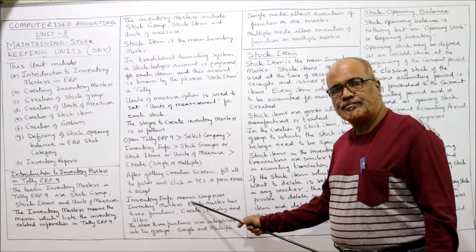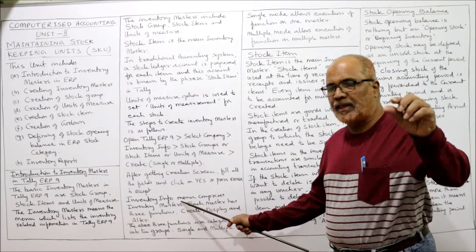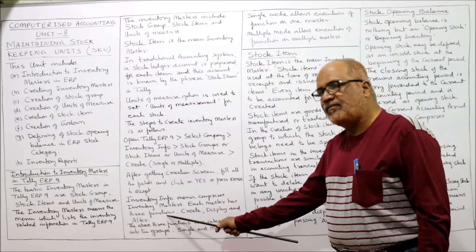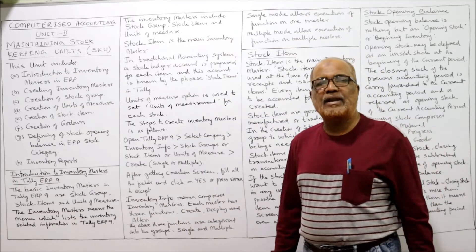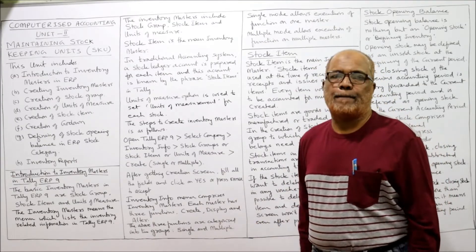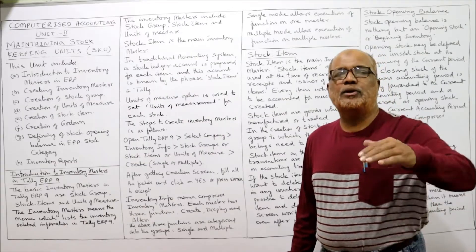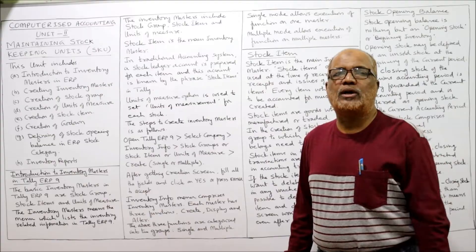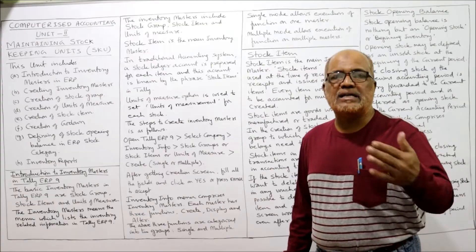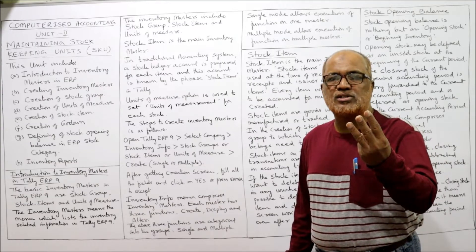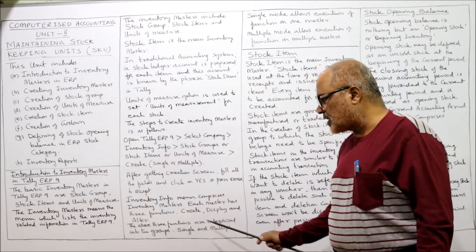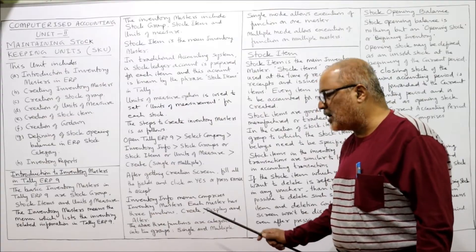Inventory info means inventory information — that menu comprises inventory masters. Each master has three functions: create, display, and alter. So not only creation but also you can alter and display. These three functions are categorized into two groups — single or multiple. This creation will be single mode or multiple mode; similarly, alteration is for single mode or multiple mode.